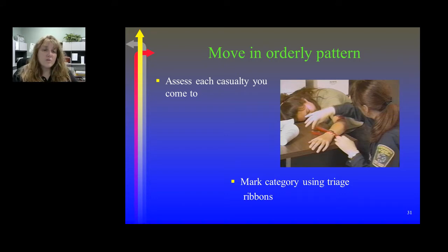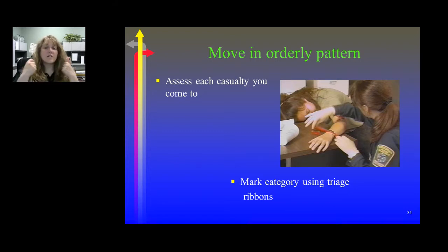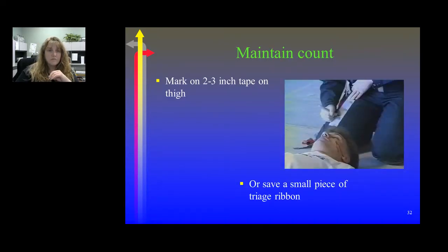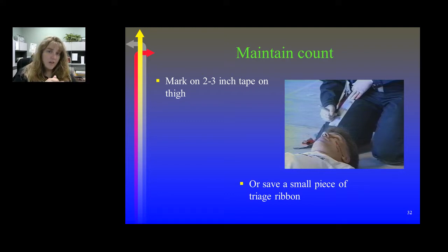If you have a situation where patients may have arms missing, ask yourself where to place the tag — the easiest way is to tie the ribbon around their neck. Maintain your count by either marking on a piece of two-inch tape on your leg or pulling a piece of ribbon and putting it in your pocket. Either way works.